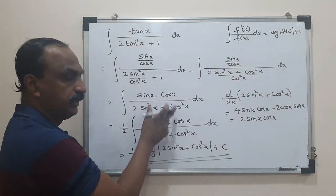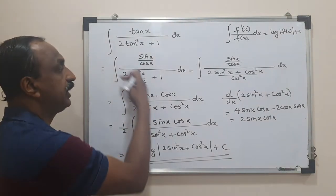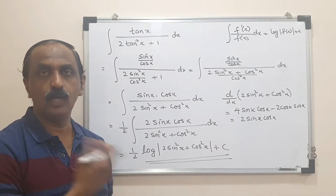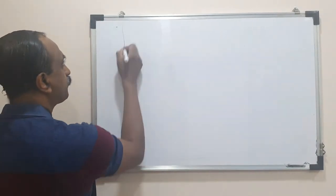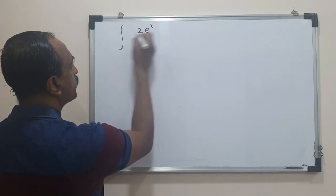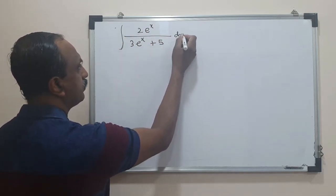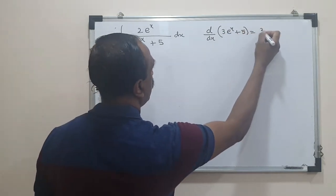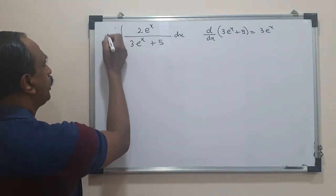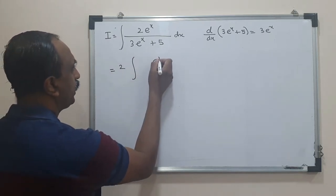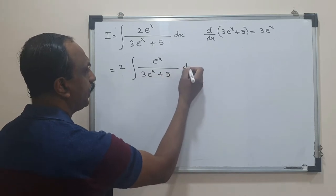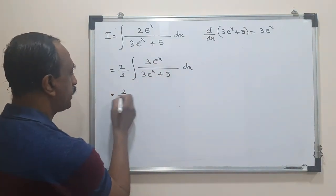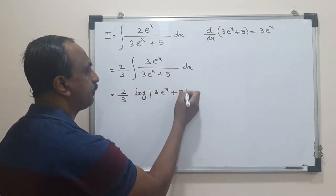Manipulate the function such that the denominator's derivative comes to the numerator. It will take some practice to recognize what kind of question it is. Now let's look at exponential functions. Integral of 2eˣ over (3eˣ + 5) dx. The derivative of the denominator (3eˣ + 5) is 3eˣ, but we have 2 here. Take 2 outside, then divide and multiply by 3. The answer is (2/3) log|3eˣ + 5| + C.